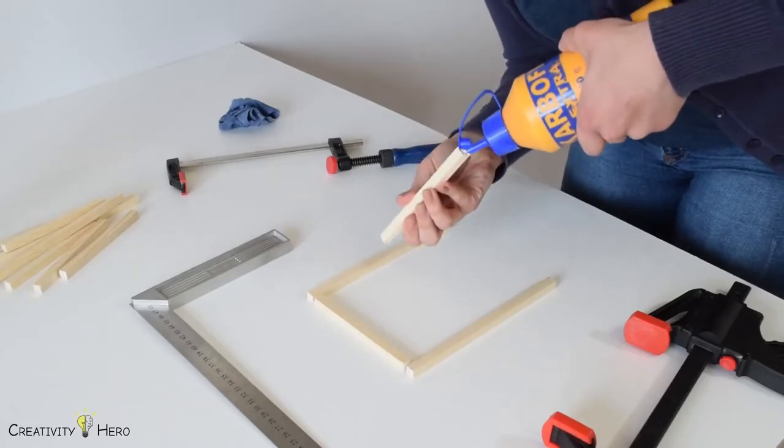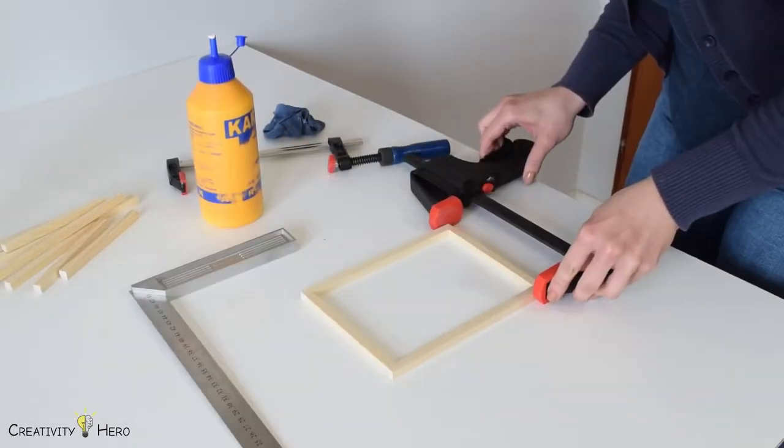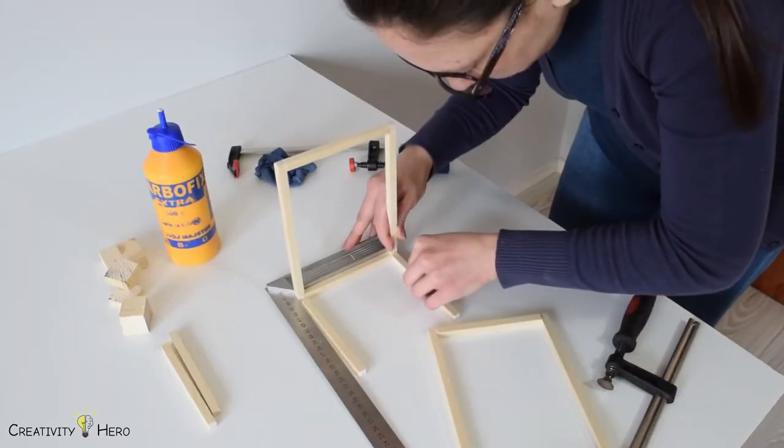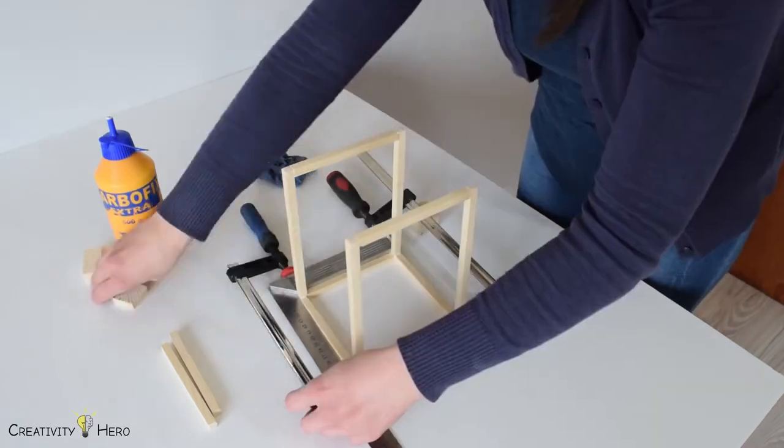The next step is building the cuboid frame. I glued all the pieces together and used a square ruler along with the clamps to make a perfect right angle.